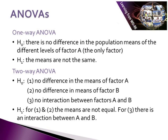For a one-way ANOVA, the null hypothesis is that there is no difference in the population means of the different levels of factor A, the only factor, and the alternative is that the means are not the same. For a two-way ANOVA, the possible null hypotheses are: one, there is no difference in the means of factor A; two, there is no difference in the means of factor B; and three, there is no interaction between factors A and B. The alternative hypothesis for cases one and two is that the means are not equal, and the alternative for case three is that there is an interaction between A and B.